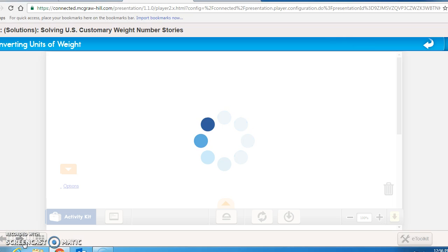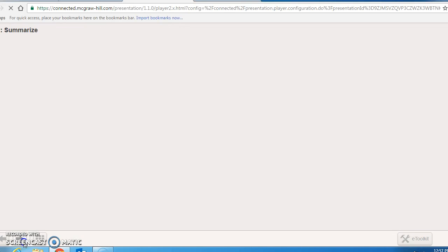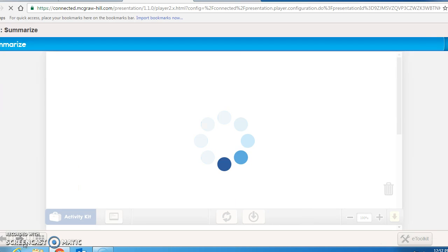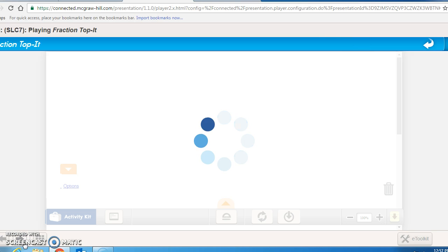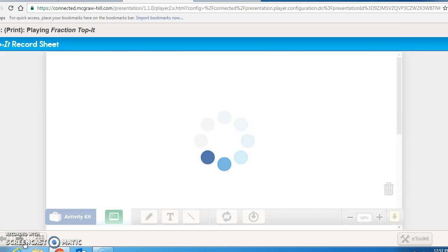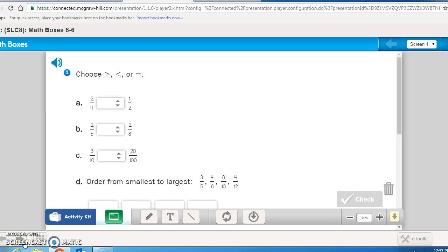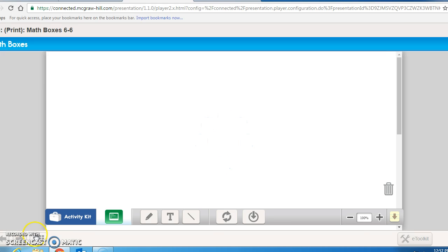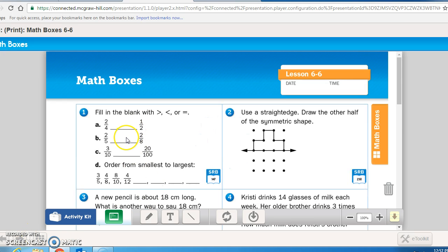What you're going to do next is math journal page 203. Again, for those of you who need it read to you, I'm going to read it to you. For those who don't, you may pause the recording now to finish that page. As you're noticing on the screen, I'm flipping through the pages that you are not going to need right now. So here's where we're at. On math journal page 203, the first math box is asking you to fill it in with greater than, less than, or equal to. And then D is asking you to order it from smallest to largest. Pause the recording now and do math box one.